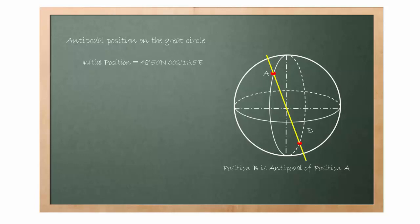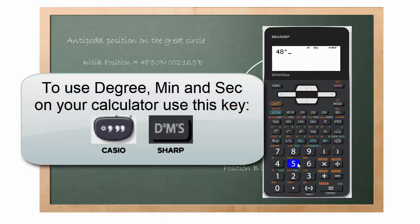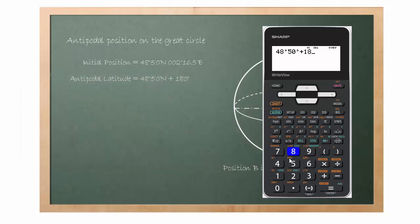Thus, to find antipodal latitude, we just need to add 180 degree. 48 degree, 50 minute plus 180 degree equal to 228 degree, 50 minute.